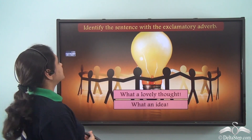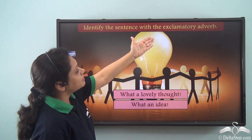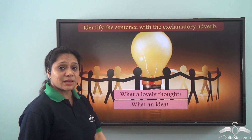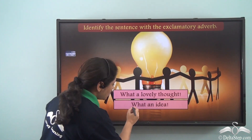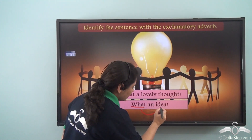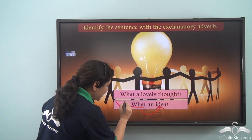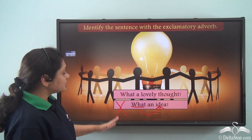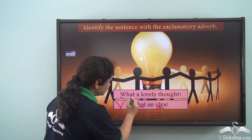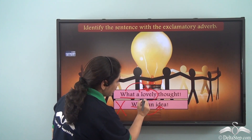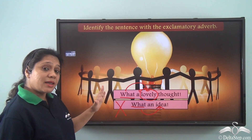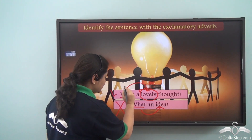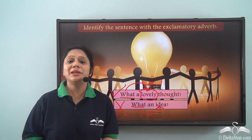Now let us do this exercise: identify the sentence with the exclamatory adverb. 'What a lovely thought.' 'What an idea.' In the second sentence, 'what' modifies the noun 'idea', so it has been used as an adjective, not an adverb. In the first sentence, 'what' modifies the adjective 'lovely' — hence 'what' has been used as an exclamatory adverb. So the first sentence is the correct answer.